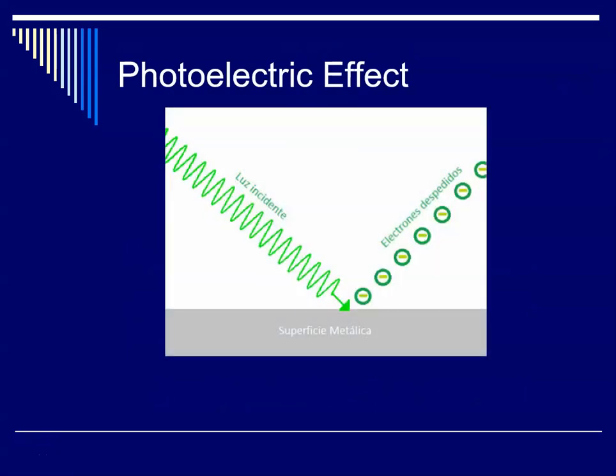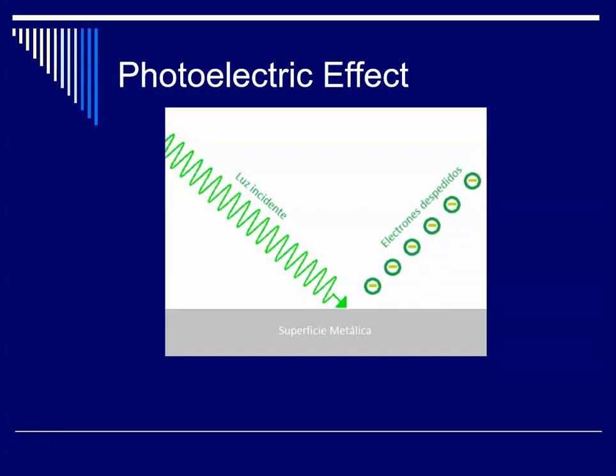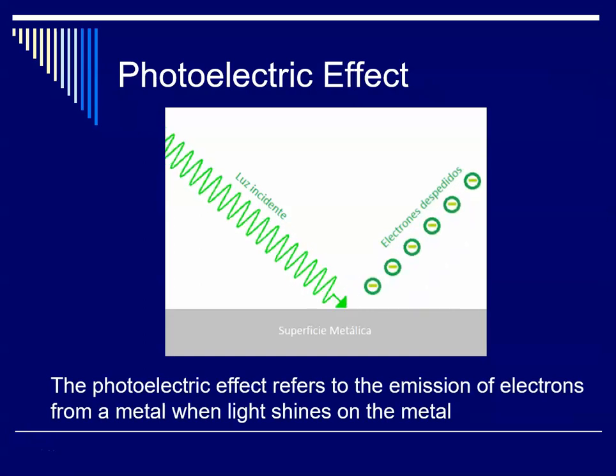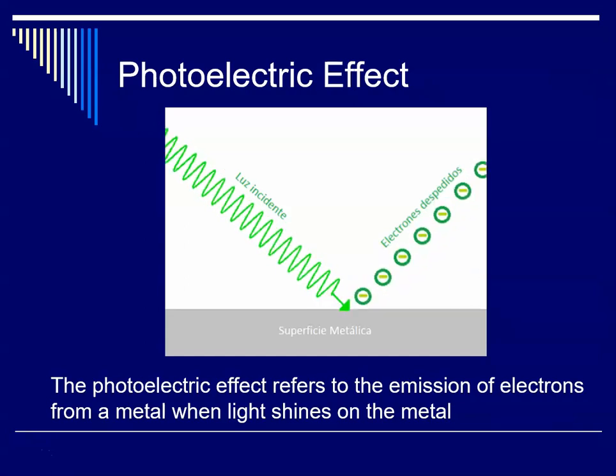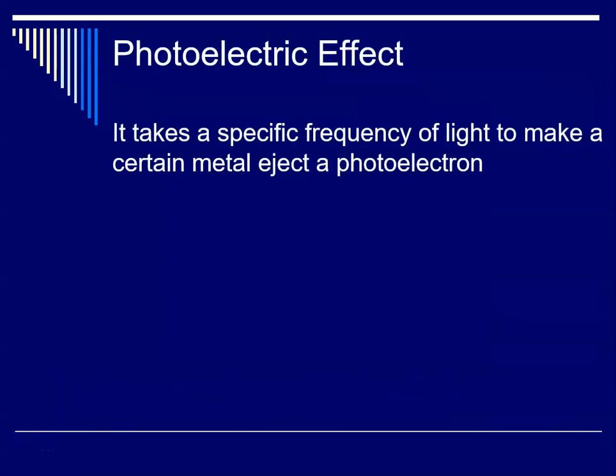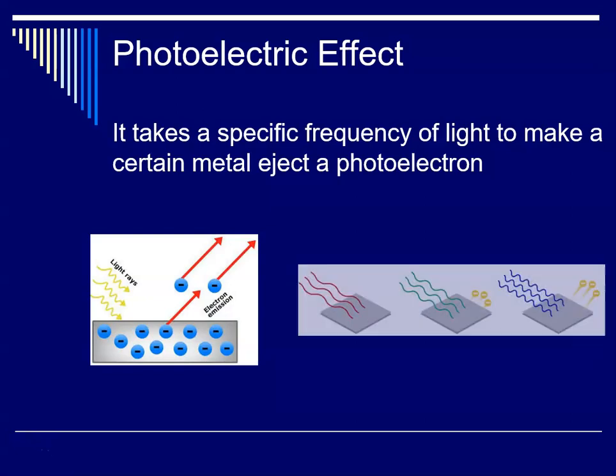So then we need to talk about the photoelectric effect, and this was something that was observed in the 1800s. The photoelectric effect refers to the emission of electrons from a metal when light is shined on it. And it was observed that it takes a specific frequency of light to make a metal eject a photoelectron. So different metals took different frequencies of light in order to make that happen. And you'll see that different colors of light had a different effect.